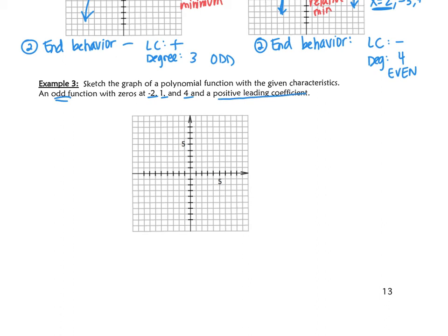First thing we're going to do is plot those zeros. Those zeros are the x values: -2, 1, and 4. So those are my zeros. We also know that we have a positive leading coefficient, which means we are ending up. And we know the function is odd. What does it mean if the function is odd? Our graph is going to start and end differently. Even starts and ends the same. Think of twins. Odd starts and ends differently.